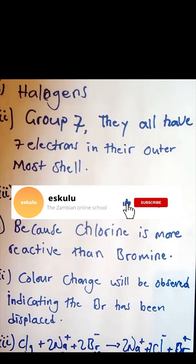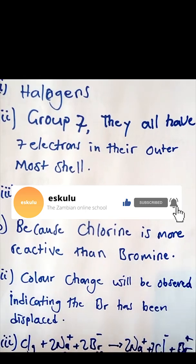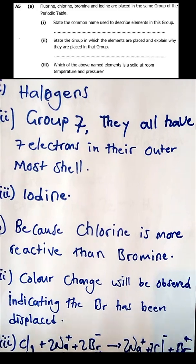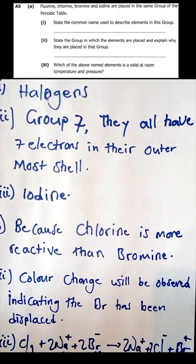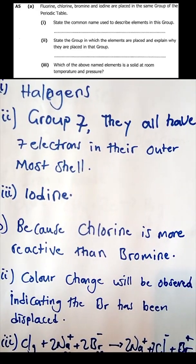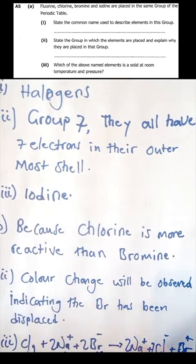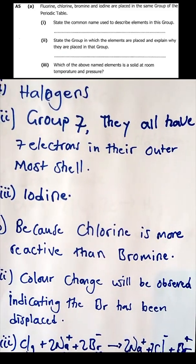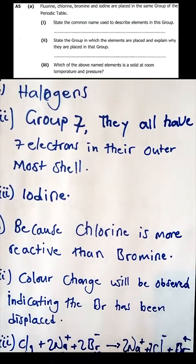The next question is about the periodic table. You are given fluorine, chlorine, bromine, and iodine. They are placed in the same group of the periodic table. State the common name used to describe elements in this group. The common name is halogens — they are called halogens, which are the group seven elements.